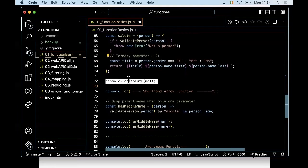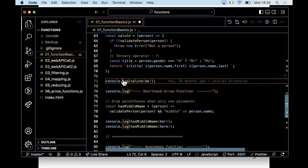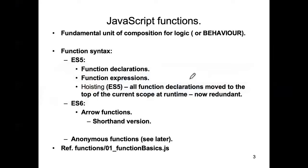I'm passing in 'me', and I expect to get back 'Mr. German O'Connor'. There is also a shorthand version of the arrow function, which I elaborate on in the next slide.